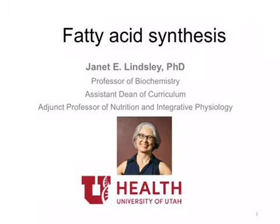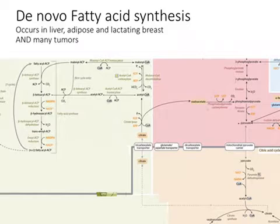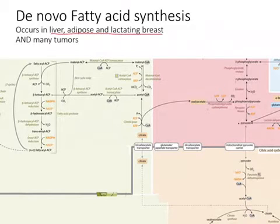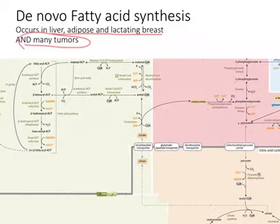Welcome to this mini-lecture on fatty acid synthesis. This image shows the relevant portions of the Pathways of Human Metabolism metabolic map for de novo fatty acid synthesis. Fatty acid synthesis occurs in humans primarily in liver, adipose, and lactating breast tissue, but also in many tumors. Remember that tumors have to create lots of membranes and need the phospholipids, which are built from fatty acids. We'll be talking about the various portions of this pathway, breaking them down into various sections on the upcoming slides.